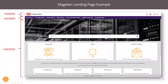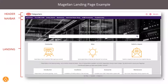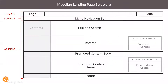Now I'm going to go through the basic structure of a Magellan site, starting with the landing page. Magellan runs in two modes: landing page mode and content mode. In landing page mode, there are three key sections — these labels in red relate to sections in the CSS. Looking at the wireframe underneath, the header has three sections: the navigation bar, the title and search area, and the rotator with rotator items containing a heading and a body. Then we have a section for promoted content items, followed by the footer.